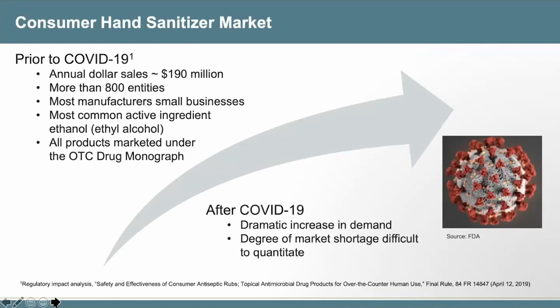The consumer hand sanitizer market has dramatically changed since the COVID-19 pandemic. Prior to the pandemic, the market was fairly small, with annual dollar sales of around $190 million, compared to $1.2 billion for sun care products and more than $9 billion for upper respiratory products in 2019. The hand sanitizer market was mostly made up of small businesses, with an overwhelming percentage of products using ethanol as the active ingredient. Since the public health emergency, these products have been flying off the shelves and supply was unable to keep up with the marked increase in demand.